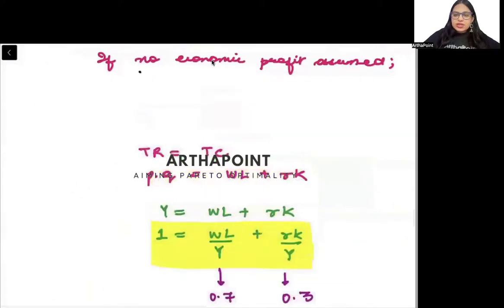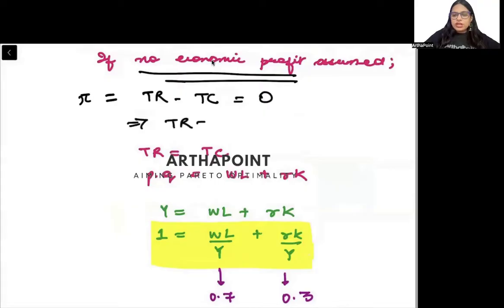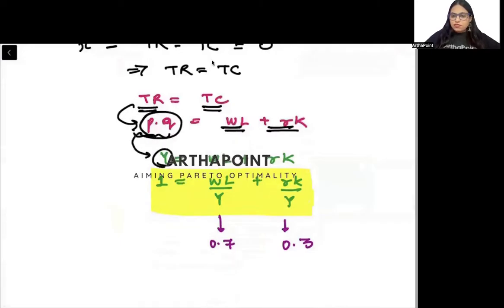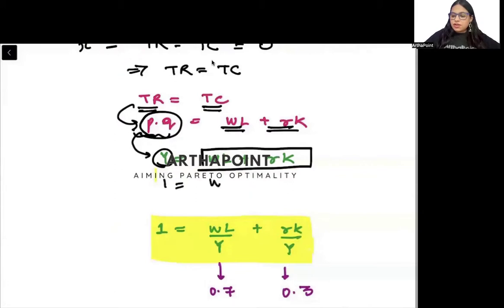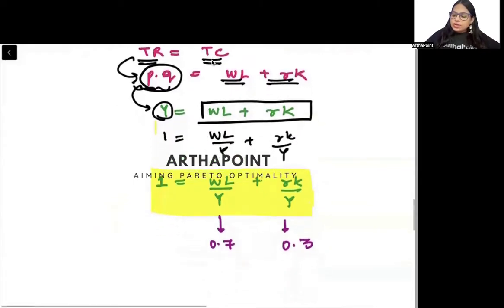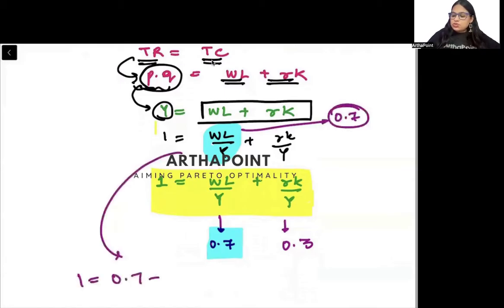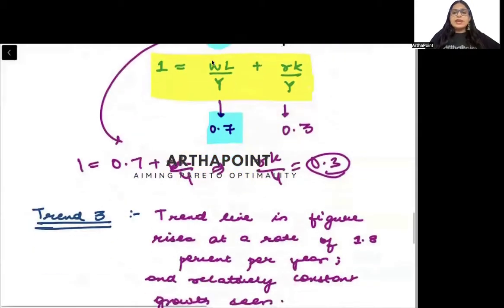The author says that let's assume that there is no economic profit. Profit is total revenue minus total cost. No economic profit means zero economic profit. So, total revenue is equal to total cost. TR is nothing but price into quantity. And TC is nothing but cost, WL plus RK. Price into quantity we take as GDP or output. So, Y equals WL plus RK. We have divided throughout by Y. So, we get 1 equals WL by Y plus RK by Y. Now, we are given that this is 0.7. The share of labor in output is constant at 0.7. So, if I plug in the value I will get 1 equals 0.7 plus RK by Y. This will give me RK by Y equals 0.3. It shows that the share of rent to output has also remained constant.